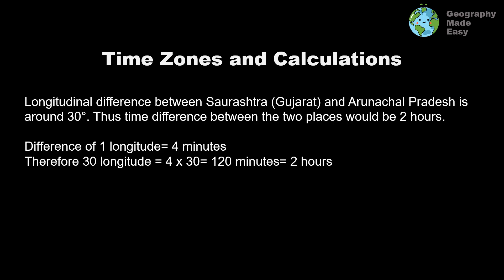The next important concept is latitude and longitudinal differences along with time zone calculation. A time zone is basically the difference between the times in two places. In India, which is quite a vast country, we see a difference of around two hours between the easternmost part of India and the westernmost part of India.